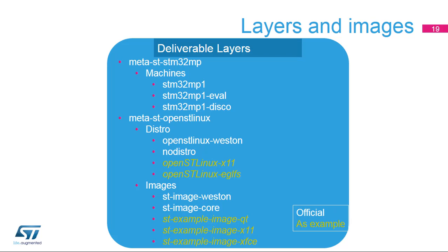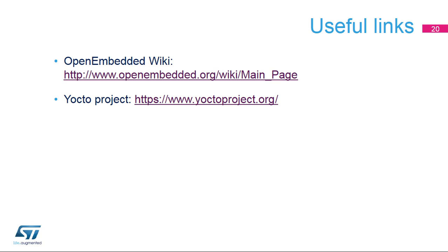It is time to connect all these concepts to what is actually implemented for OpenST Linux. The figure shows the layers created by ST. The layer meta-ST-STM32MP contains a BSP definition — actually three BSPs: a generic one (STM32MP1) that generates all selected combinations in a single compilation, useful for testers, and two dedicated machines (STM32MP1-EVAL and STM32MP1-DISCO) for the EVAL and DISCO boards. Then meta-ST-OpenST-Linux hosts both distro and image definitions. In white characters are the official offers; in italic green characters are configurations delivered as examples without official support. Here are useful links for the deployment of the OpenST distribution.